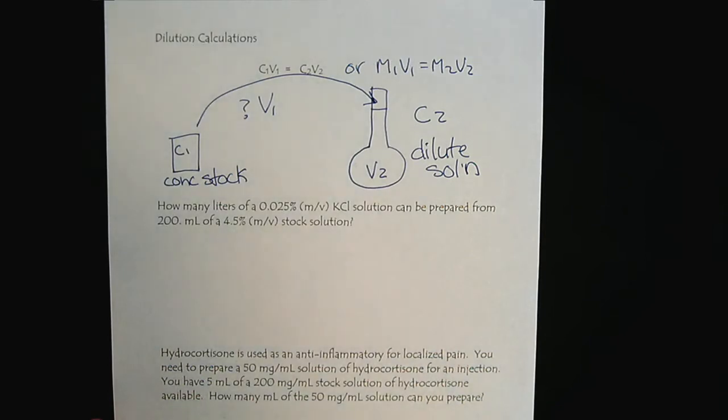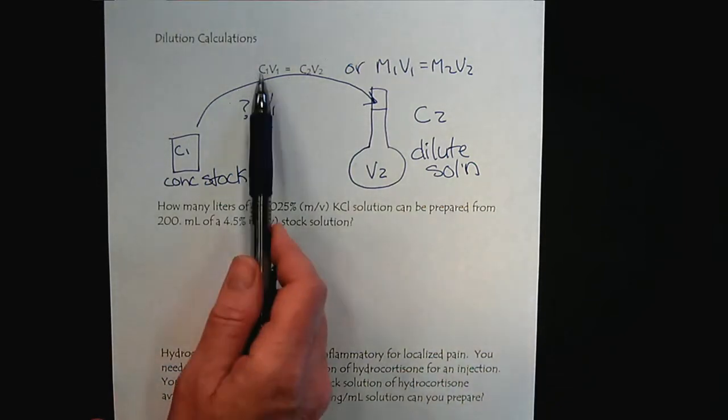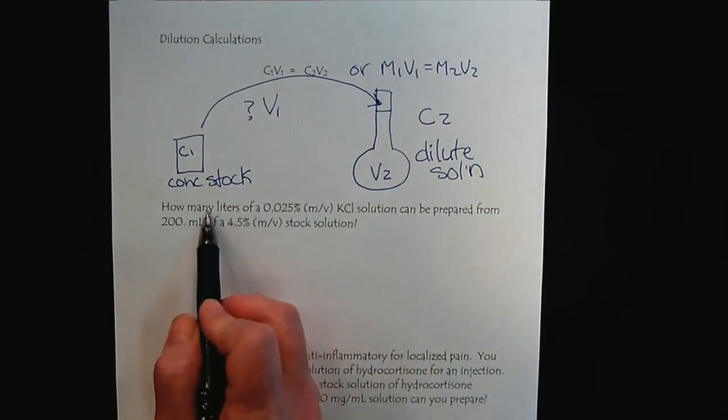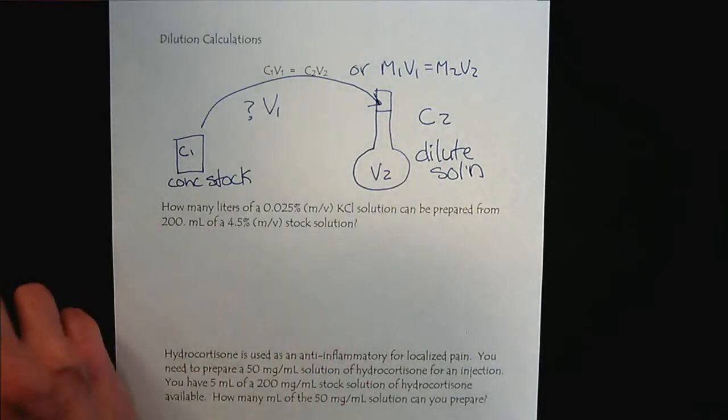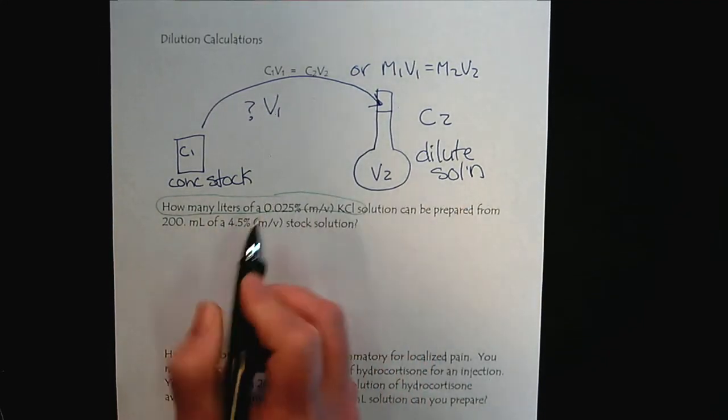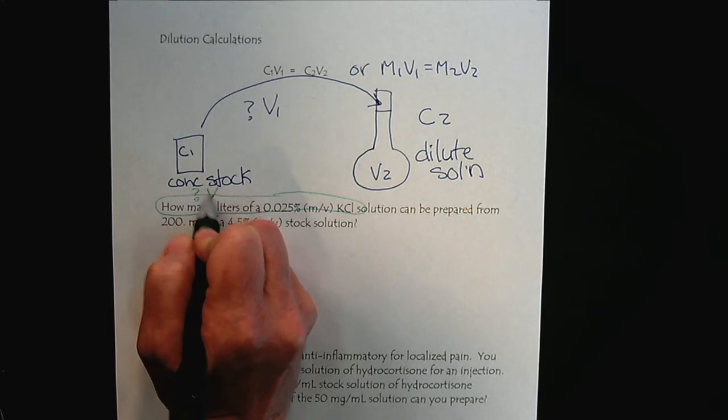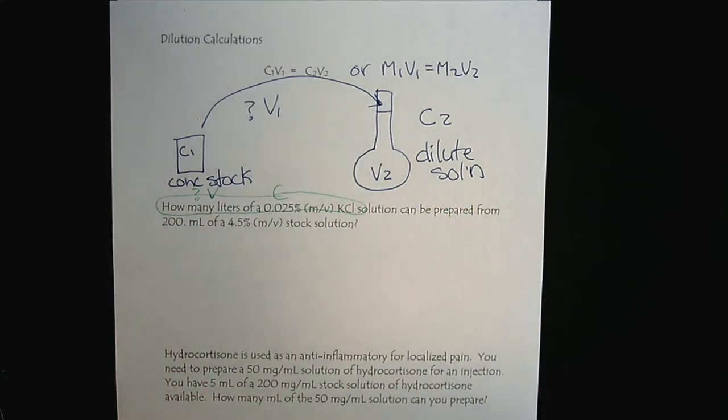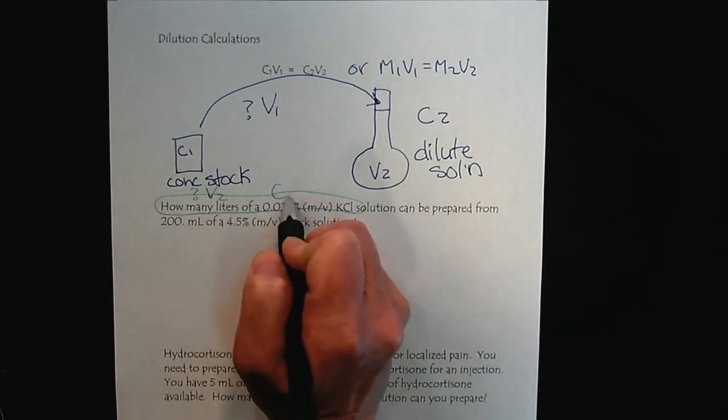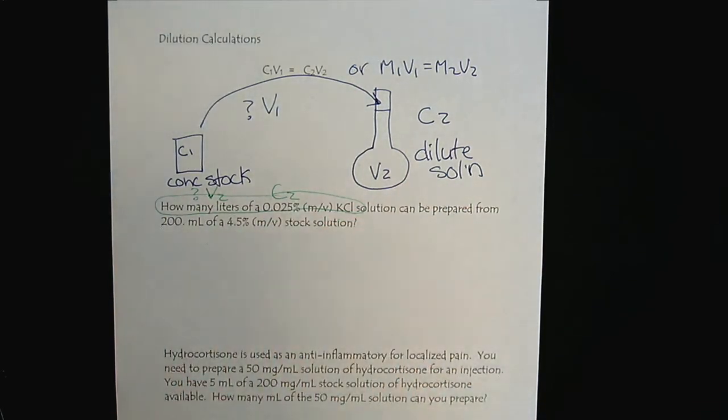The key here is to make sure that we've linked the concentration and volumes together appropriately. That seems to be the biggest challenge, because then solving it will be simple algebra. We can see that this information is all linked together. We're trying to find this volume, and this is our concentration. I notice that this concentration is much smaller than this one, so I'm going to call this V2 and C2 to keep it in line with our diagram.